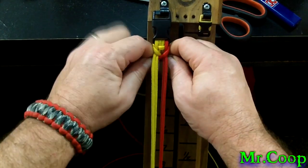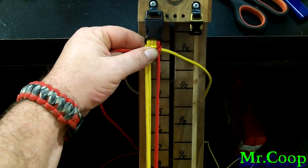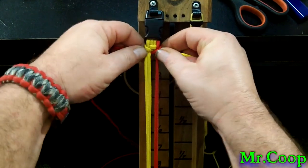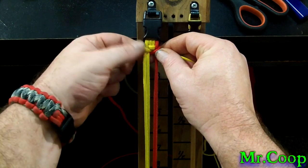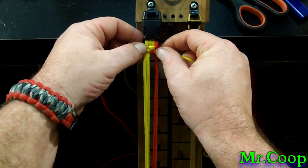Now the only thing that is kind of a pain with these bracelets is you've got to keep tension on them at all times until you get going with it really good. And then once you get going with it, it'll start locking itself together. Now remember, whatever side you start with, that's the side you want to start with on every knot.